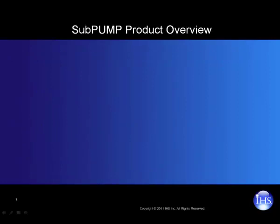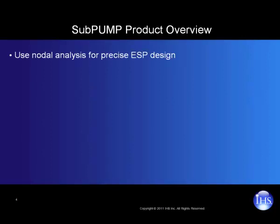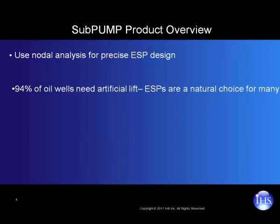While PERFORM is useful for a very wide range of scenarios, SUBPUMP is more specialized and focuses on electrical submersible pump, or ESP, design. Over 94% of wells today can't produce without artificial lift, and for many of those wells, an ESP installation is an ideal way to boost production.